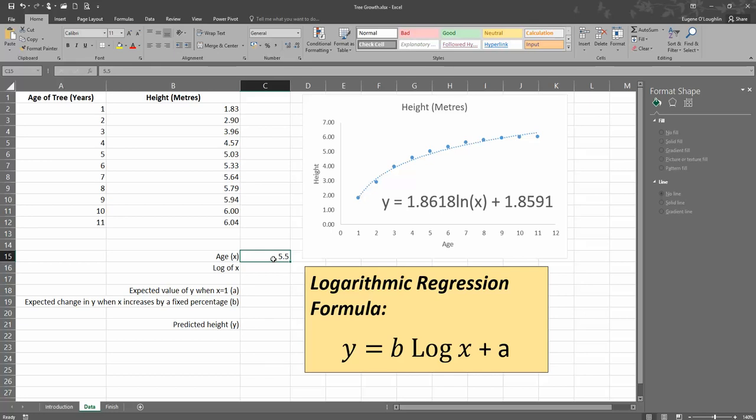So I'm going to use my independent variable value of 5.5 and I want to calculate what would the predicted height of that be using this model. Now I need to then get the log of x, and remember, it's the natural log of x. So I'm going to type in equals here and the function name is ln for the natural log of a number.